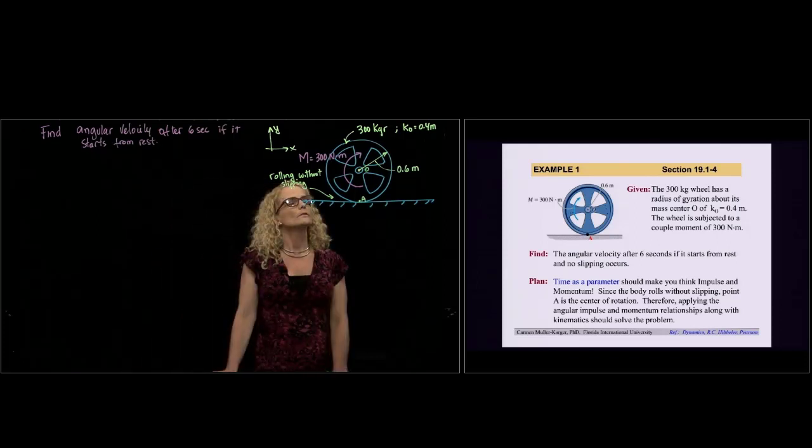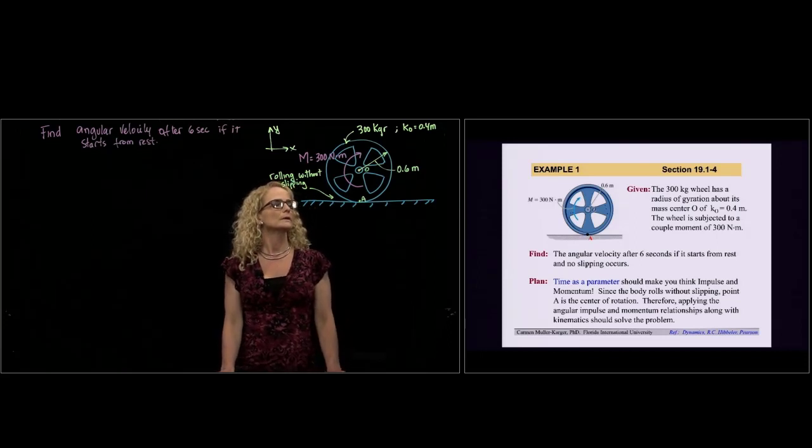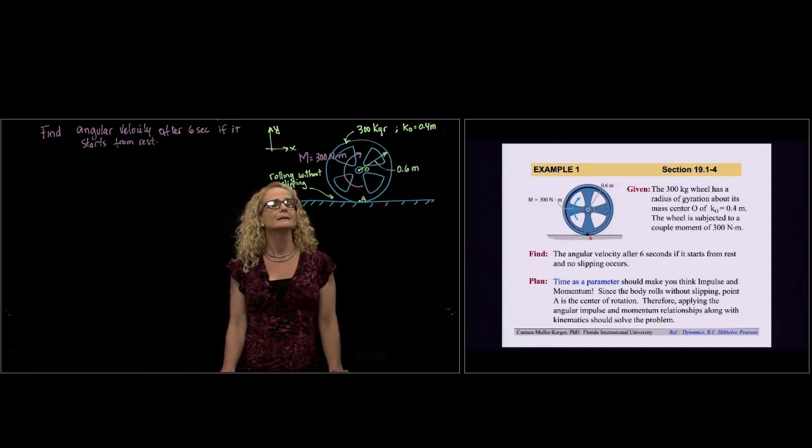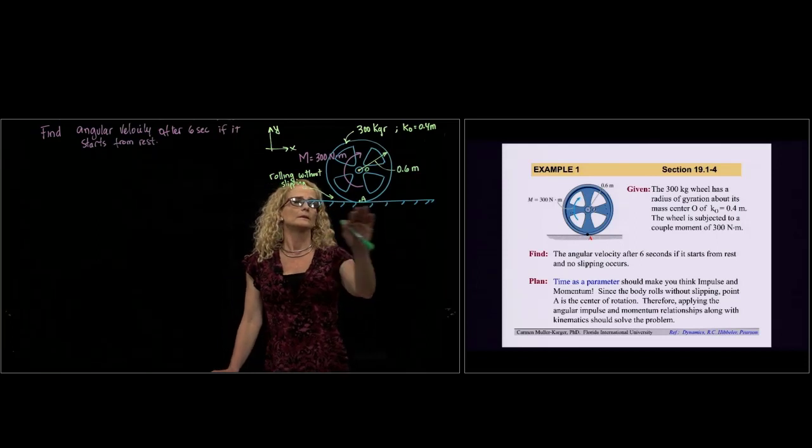We are given the values of the wheel. We have a 300 kilogram wheel with a radius of gyration of 0.4 meters and the radius of the wheel is 0.6, and the wheel is rolling without slipping over this surface.